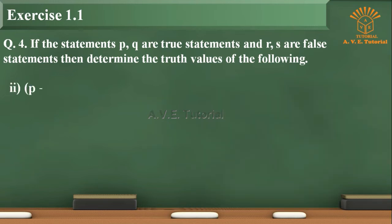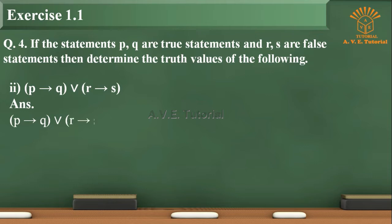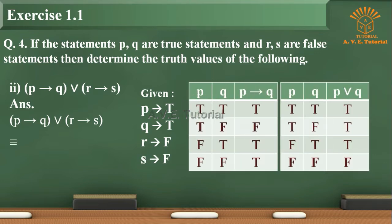Sub-question 2: (P implies Q) or (R implies S). Answer: P is true, Q is true, R is false. This is equivalent to (T implies T) or (F implies F), which is equivalent to T or T, which is equivalent to T.